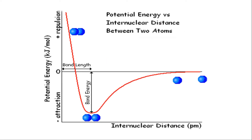Now let us go back to the graph between potential energy and internuclear distance. The x-axis represents internuclear distance and the y-axis represents potential energy. On the x-axis, potential energy equals zero. Above the x-axis, potential energy is greater than zero, and below the x-axis, potential energy is less than zero.